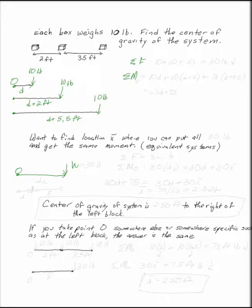So my sum of the forces here is 10 plus 10 plus 10. It's 30 pounds down. So I want to find my location x bar where I can put all of my 30 pounds and get the same sum of the moments. So my sum of the forces down here still needs to be 30 pounds, and w has to be 30 pounds.